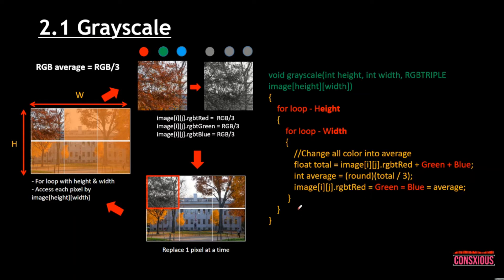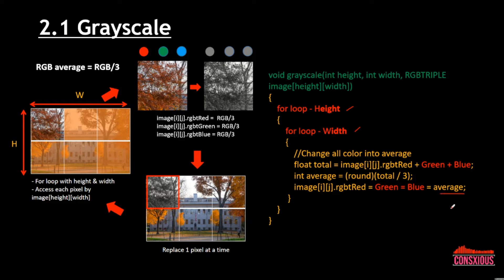Looking at the function in detail, we go through a for loop with height and width — the red-colored sections are the parts you need to fill in. After going through the loops, we extract the colors for red, green, and blue as image[i][j].red, .green, .blue, and assign them to float totals. Because there are three colors, we divide the total by three, round it, and get the average. Then all three colors are set equal to that average value, replaced one by one using the for loop.